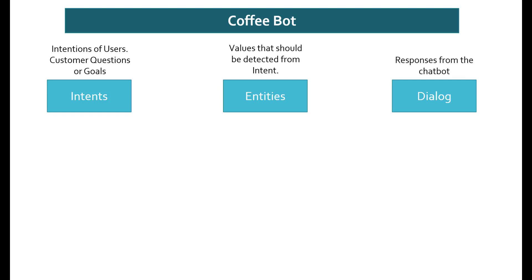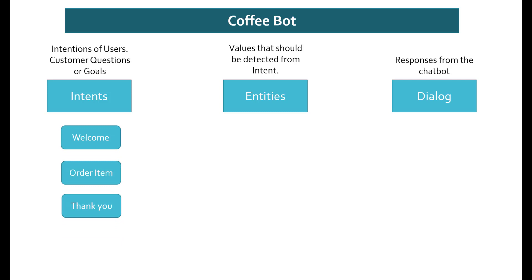The dialogue contains the responses from the chatbot back to the intents. Within intents, there are going to be three main intents we will define as part of this demo. One is the welcome intent, where the user would ask the first questions like 'hey, how are you.' The second is the order item intent, related to what kind of coffee the user wants. The last one is the thank you intent, where the order is fulfilled and the user says 'thank you, I am all done.'